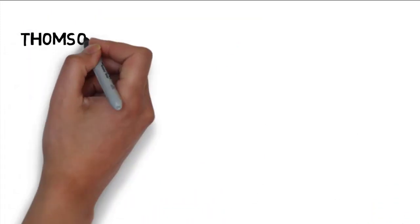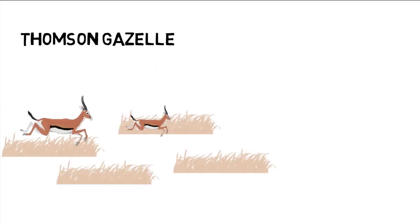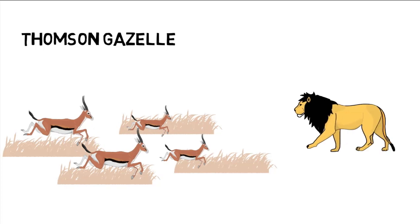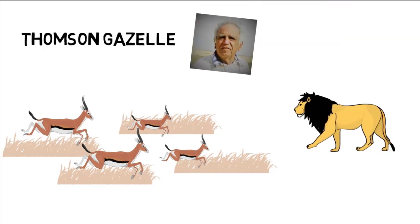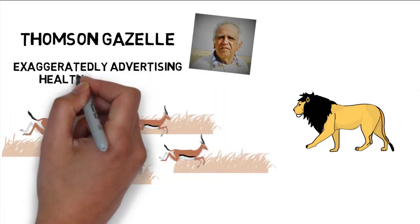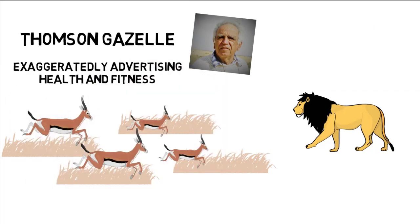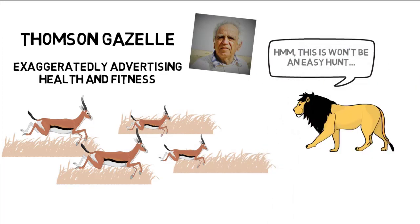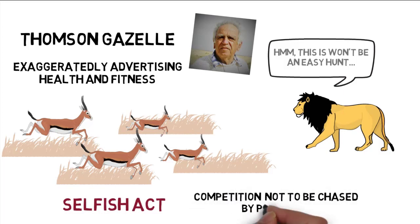Dawkins draws attention to the Thompson gazelle and its stotting behavior — jumping high into the air, seemingly provoking the predator's attention, which appears altruistic. Harvey theorizes that the gazelle is exaggeratedly advertising its health and fitness, dissuading the predator from wasting energy hunting it and instead hunting easier, less healthy prey. The act is selfish because there is a competition to see who can jump the highest and not be chased by the predator.